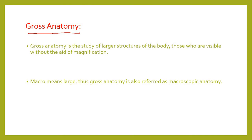Gross anatomy is the study of larger structures of the body — those which are visible without the aid of magnification. Larger parts of the body like the heart, kidney, skin, and head are visible to the naked eye; we do not use any microscope to study them. Gross anatomy is also called macroscopic anatomy, since 'macro' means large.